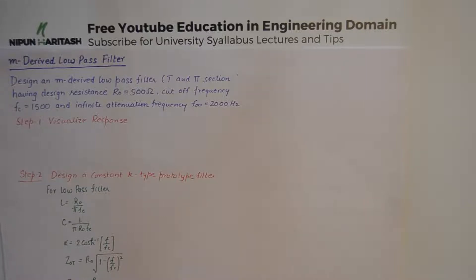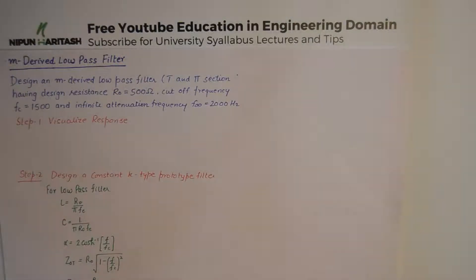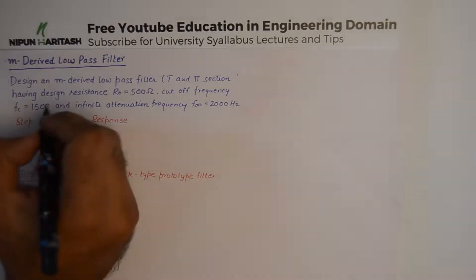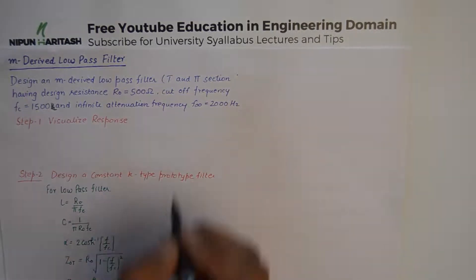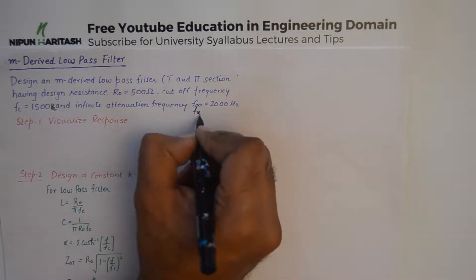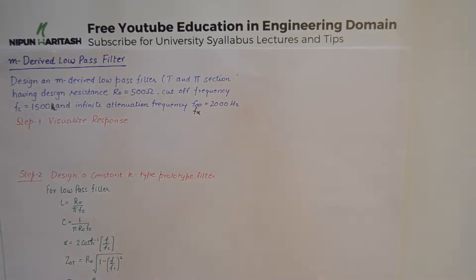We have a question which says we need to design an m-derived low pass filter, both the T and Pi sections. The design resistance R0, or the characteristic impedance, is given as 500 ohms. The cutoff frequency FC is given as 1500 Hz, and the infinite attenuation frequency, also known as f-infinity, is given as 2000 Hz.